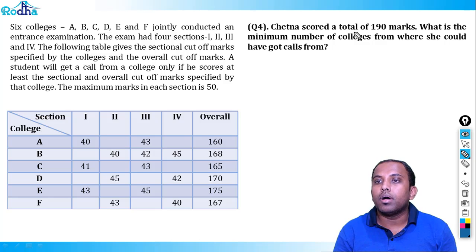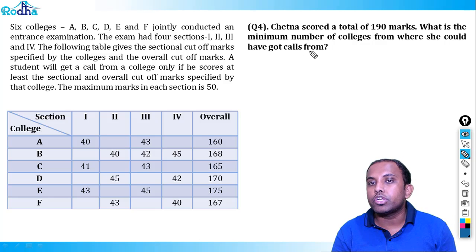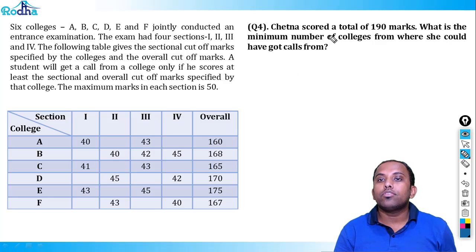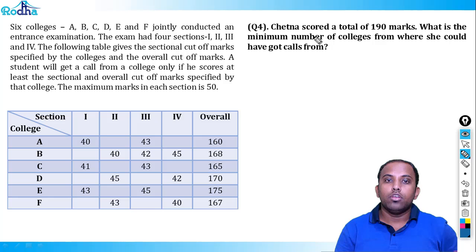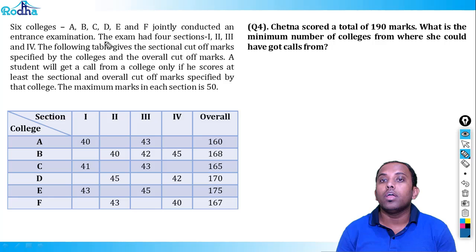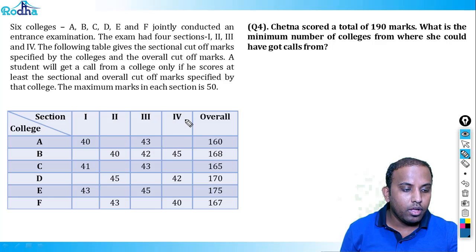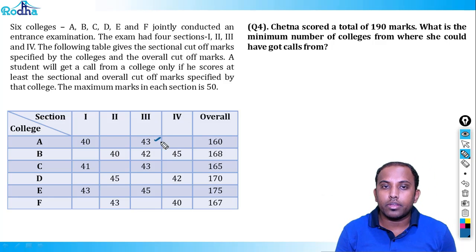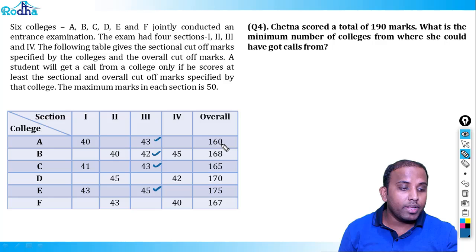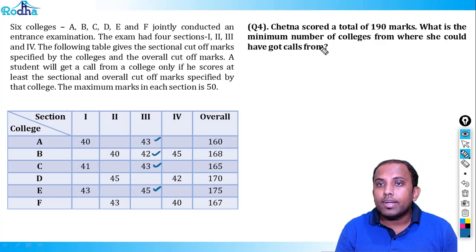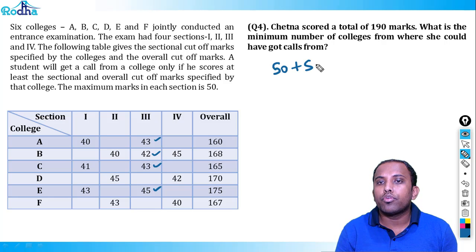Fourth question: Chetna scored a total of 190 marks out of 200. What is the minimum number of colleges from where she could have got calls? Even with a whopping 190 marks, I want to minimize the number of college calls. I start with the maximum data — section 3. The distribution 50 + 50 + 50 + 40 = 190 is one possibility. The minimum she could score in any one section is 40.